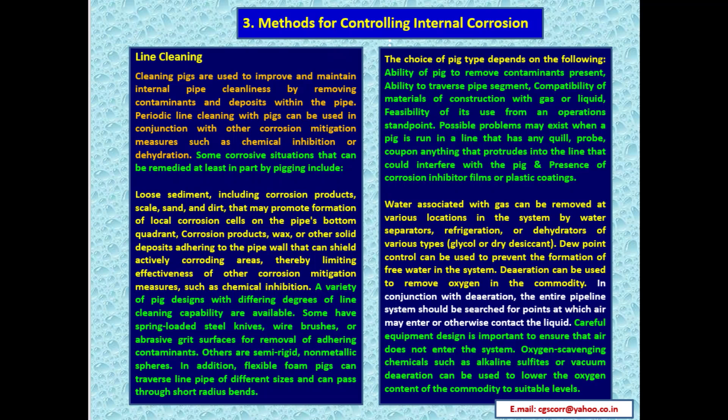A variety of pig designs with differing cleaning capabilities are available. Some have spring-loaded steel knives, wire brushes, or abrasive grid surfaces for removal of adhering contaminants. Others are semi-rigid non-metallic spheres; flexible foam pigs can traverse line pipe of different sizes and pass through short-radius bends. The choice of pig type depends on: ability to remove contaminants, ability to traverse pipe segments, compatibility of construction materials with gas or liquid, and feasibility from an operations standpoint. Possible problems exist when a pig is run in a line that has any quill, probe, or coupons protruding into the line, or presence of corrosion inhibitor films or plastic coatings.